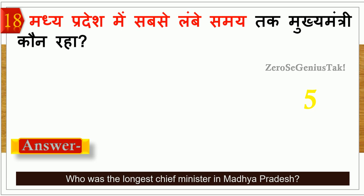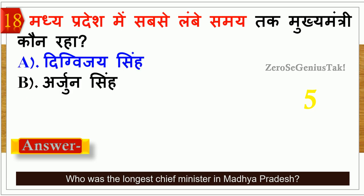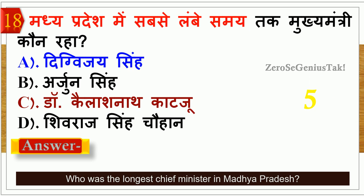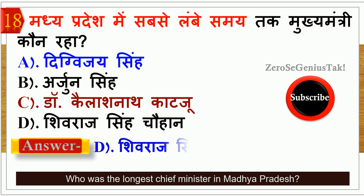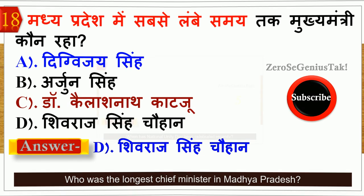The next question: Who was the Chief Minister of Madhya Pradesh for the longest time? The right answer is D — Shivraj Singh Chouhan, who is still the Chief Minister there.